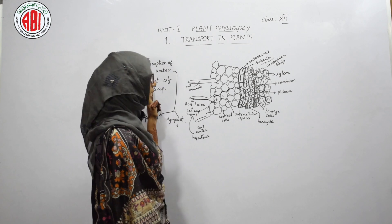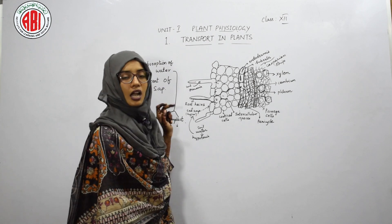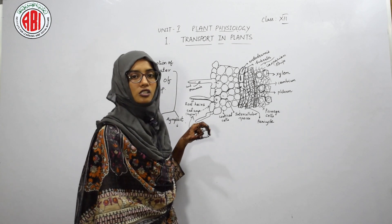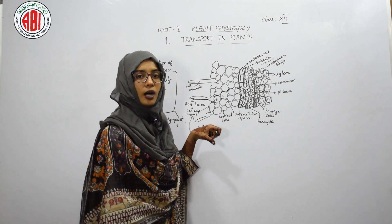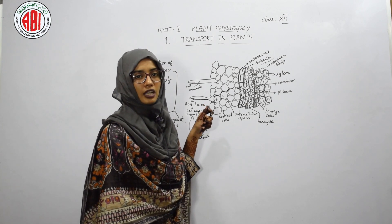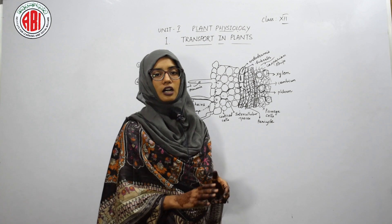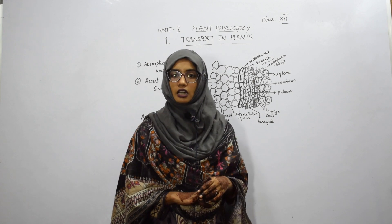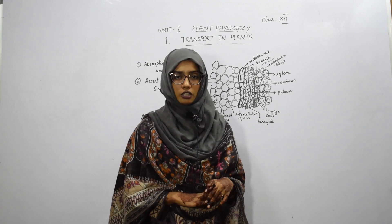This completes the first step — absorption of water. We have studied two means: apoplast, where water moves through the cell wall or intercellular spaces, and symplast, where water moves into the cells, eventually reaching xylem vessels for upward movement. The second step — ascent of sap, how water moves upward from the xylem vessels — will be discussed in our next class. Thank you.